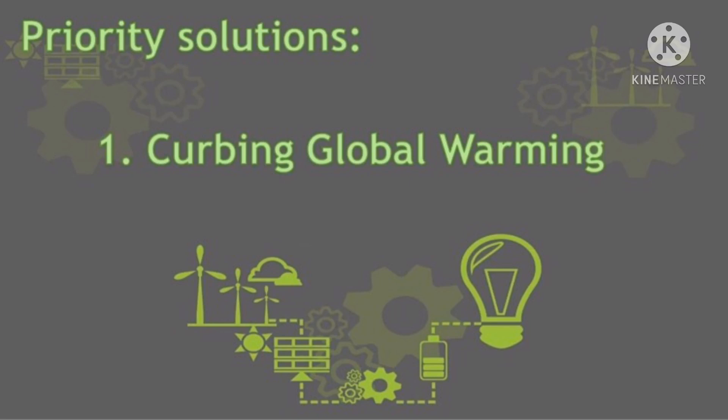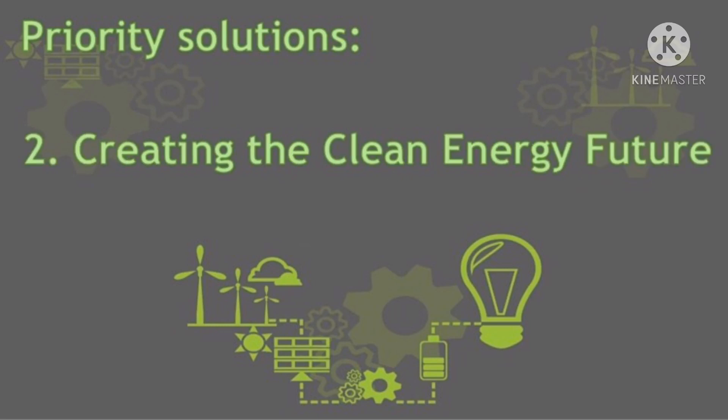Priority solution number one: Curbing global warming. Climate change is the single biggest environmental and humanitarian crisis of our time. We must act now to spur the adoption of cleaner energy sources at home and abroad. Priority solution number two: Creating the clean energy future. Dependence on fossil fuels threatens our national security and is a major contributor to global warming and toxic air pollution. By investing in renewable energy sources such as the sun, wind, and biomass, we can help solve the energy and climate crisis.